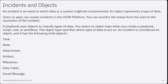Incidents and objects: the simplest definition of an incident is an event in which data or a system might be compromised. An object represents a type of data, and the object type specifies which type of data to act on. An incident is considered an object with the following child objects, which we have seen in earlier sessions: tasks, notes, attachments, artifacts, milestones, data tables, and email messages. All of these aspects were discussed in detail during our sessions on incidents.